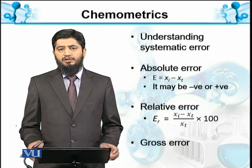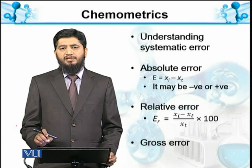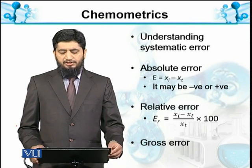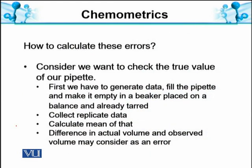This distribution is necessary to generate data replicates. After data collection, we calculate the mean. In this example, the mean is 9.5 ml, and the difference between the actual value and the observed value may be considered as an error.